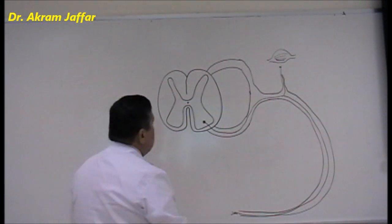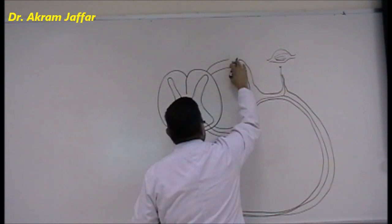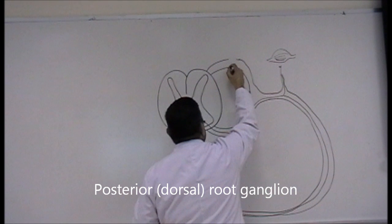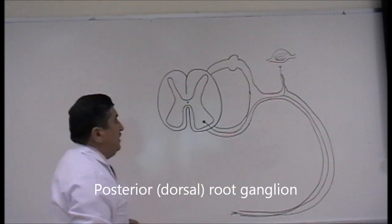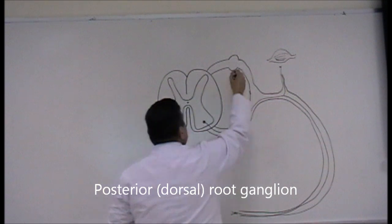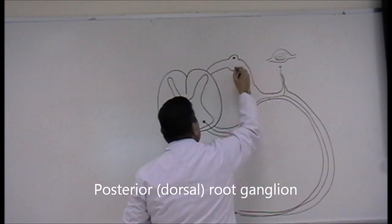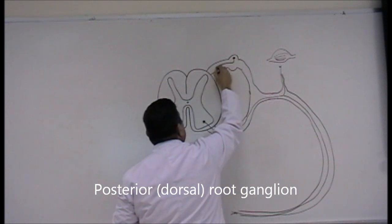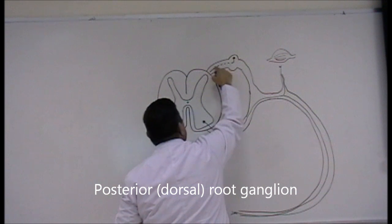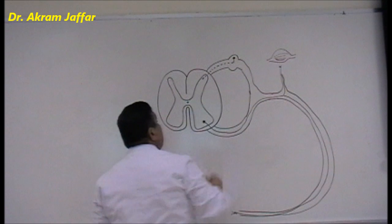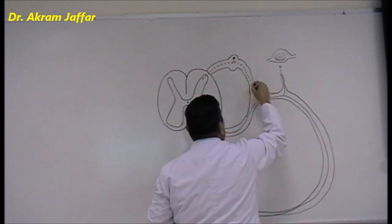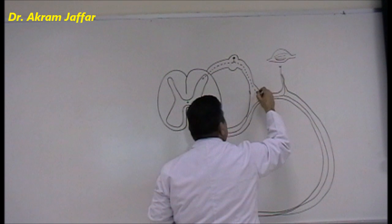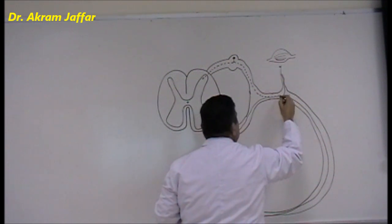These fibers are motor fibers that supply the skeletal muscle. In addition, the spinal nerve contains sensory fibers. These sensory fibers have their cell bodies in a ganglion located in the posterior root — the dorsal root. A ganglion is a collection of nerve cell bodies outside the central nervous system, so this is called the dorsal root ganglion. It contains cell bodies of pseudo-unipolar neurons, which have a central axon and a peripheral axon. This peripheral axon passes through the posterior root of the spinal nerve and then continues into the spinal nerve itself.